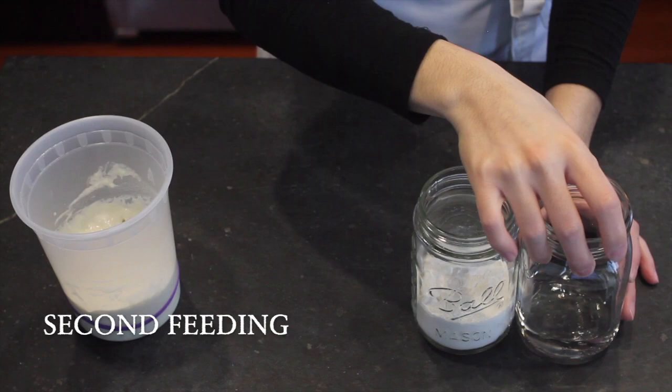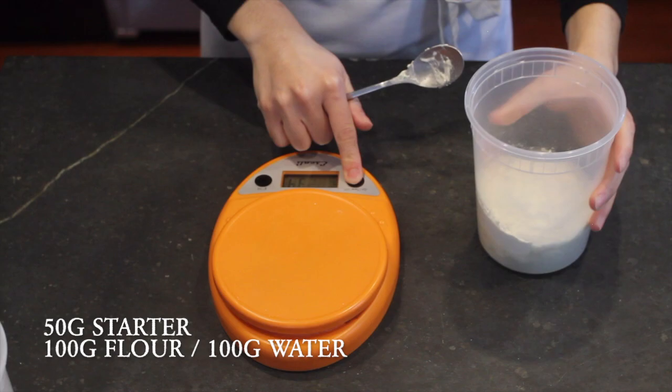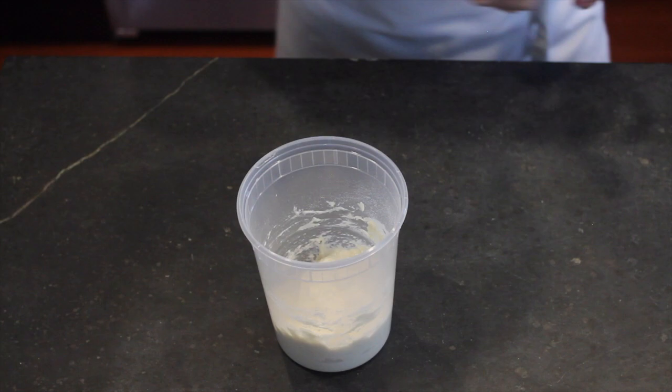Once we do see this surge of activity, we're going to separate our starter into two parts. We'll have what's called discard, which you should never actually discard, and a small portion of starter that we can continue to feed. We're going to keep 50 grams of starter and feed it 100 grams of flour along with 100 grams of warmish water. Stir it all together. Mark where your mixture is and keep tabs on it and its bubble activity for the next 24 hours.